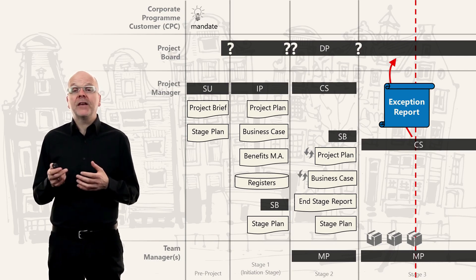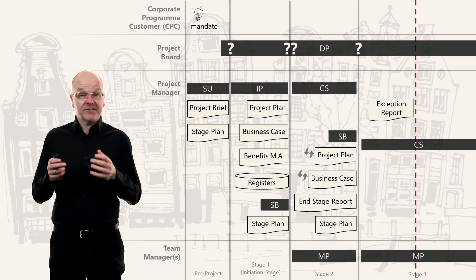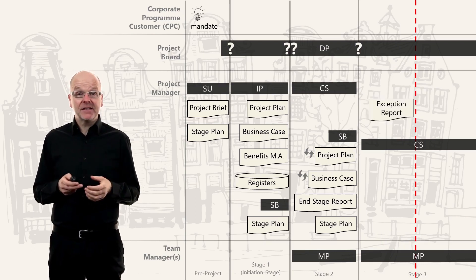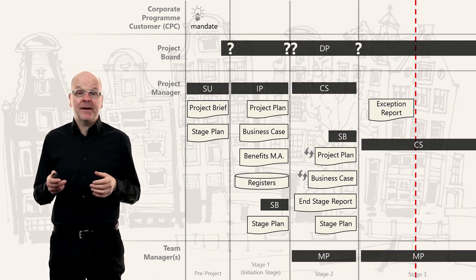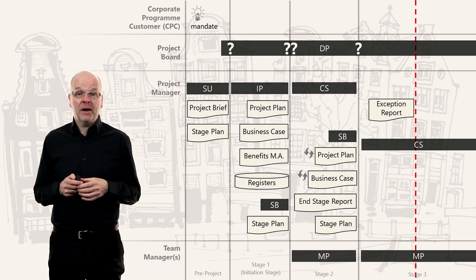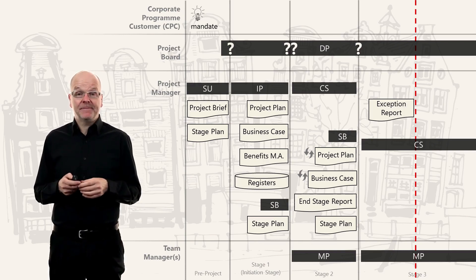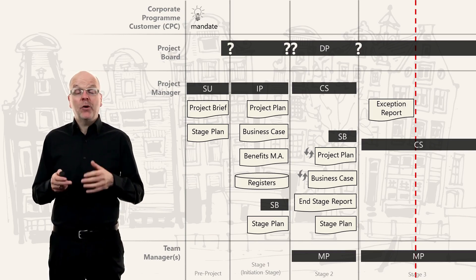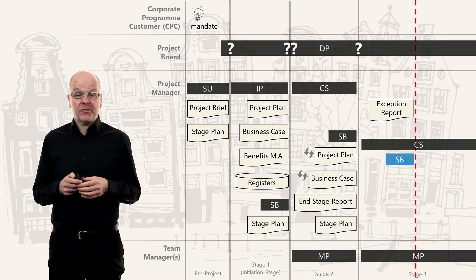The project board will come together to discuss the exception report, and the project manager waits for their response. The project board can decide to stop the project — for example, if lots of issues like this are happening, they might say enough is enough. Or they can ask for a new stage plan.